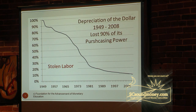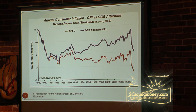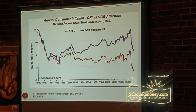That slowing is really the result of dishonesty on the part of the government. There's a scholar associated with the Foundation for the Advancement of Monetary Education named John Williams — an establishment economist earlier in his career, now with clients like Boeing and IBM. He runs a website called shadowstats.com.